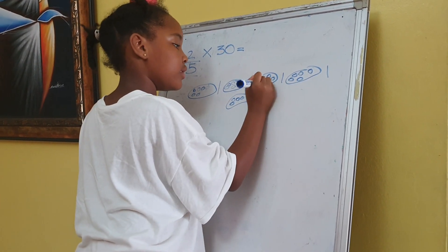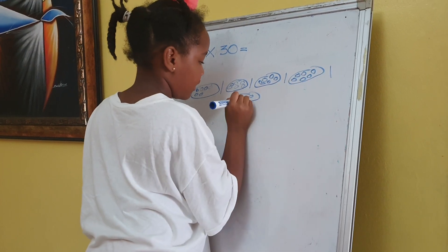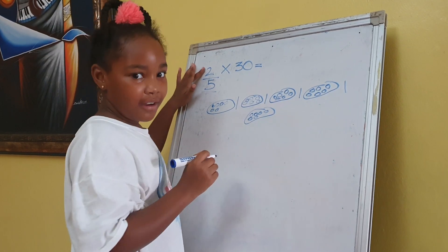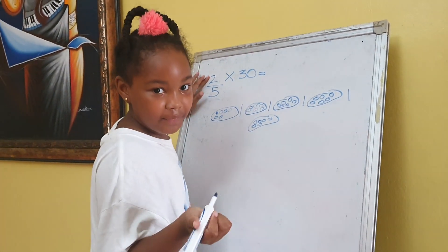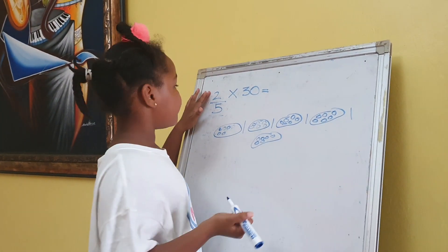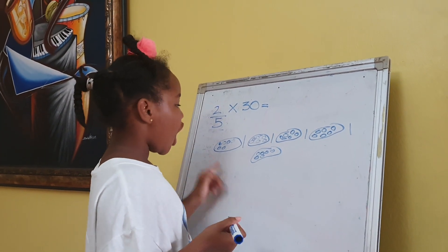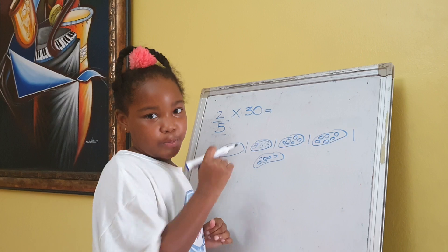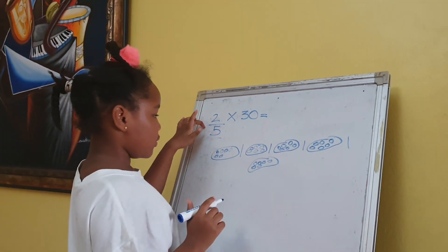Okay, so we have 30, and then when we look up here, the numerator is the top number, right? So that tells us how many circle marbles we're supposed to shade. Okay, so that says two, so we're going to shade all the marbles in this one and all the marbles in that.